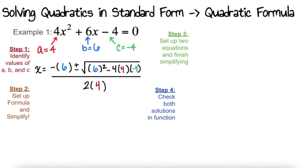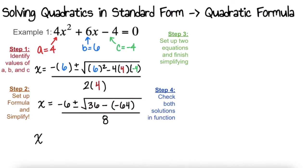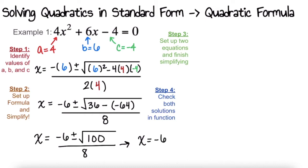Let's simplify: negative 6 plus or minus the square root of 6 squared, which is 36, minus 4 times 4 is 16, and 16 times negative 4 is negative 64, all over 2 times 4, which is 8. Working from inside out, I'll focus on simplifying what's in the radical. So x equals negative 6 plus or minus the square root of 36 minus negative 64, which is 100, all divided by 8. We can simplify further to x equals negative 6 plus or minus 10 over 8.